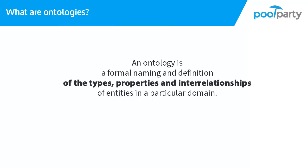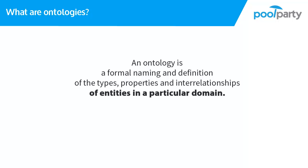The definition covers the types, properties and interrelationships of entities. In our case the entities would be concepts in our taxonomy, so in the ontology we define types, properties and interrelationships of concepts. The last part says entities in a particular domain, so an ontology is not universally applicable — it is valid for your domain. Within PoolParty we could say that an ontology is valid for your thesaurus, in which you describe your domain.